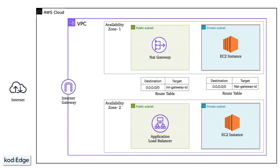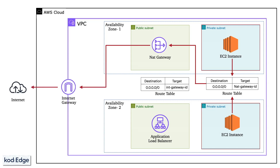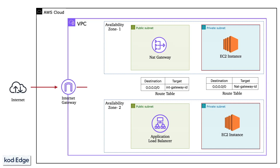When an EC2 instance in a private subnet wants to access the internet, for example to download updates or access external services, it will send an outbound request. The route table associated with the private subnet will direct all internet-bound traffic to the NAT gateway. The NAT gateway is responsible for translating the private IP addresses of the EC2 instances to its own public IP address, then sends the request to the internet gateway, and using the internet gateway it gets access to the internet. Though EC2 instances have access to the internet, it is not possible to access the EC2 instance directly with the NAT gateway.